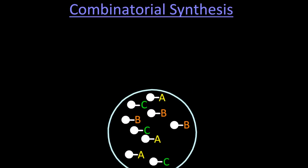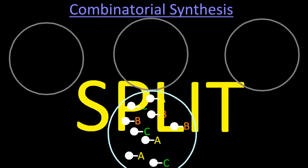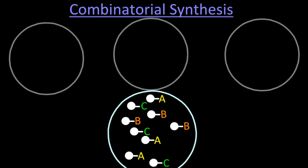Now split them up into three separate containers in this case. So each one is now going to contain some A, some B, and some C.